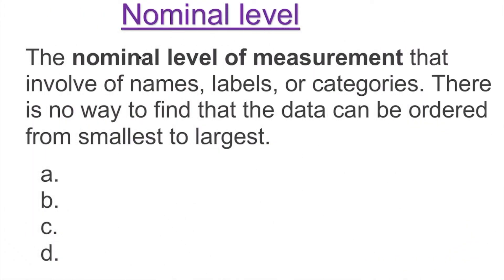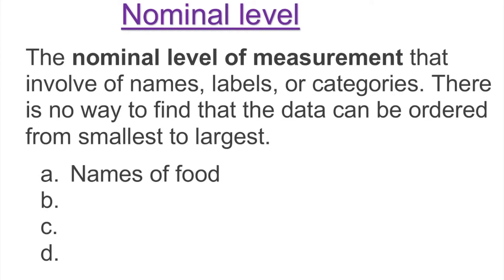So the nominal level of measurement involves names, levels, and categories. There is no way to order the data from smallest to largest — it's just name-level categories. For example, names of food: chicken curry, goat curry, rice, spaghetti — those are just names. That's nominal data.